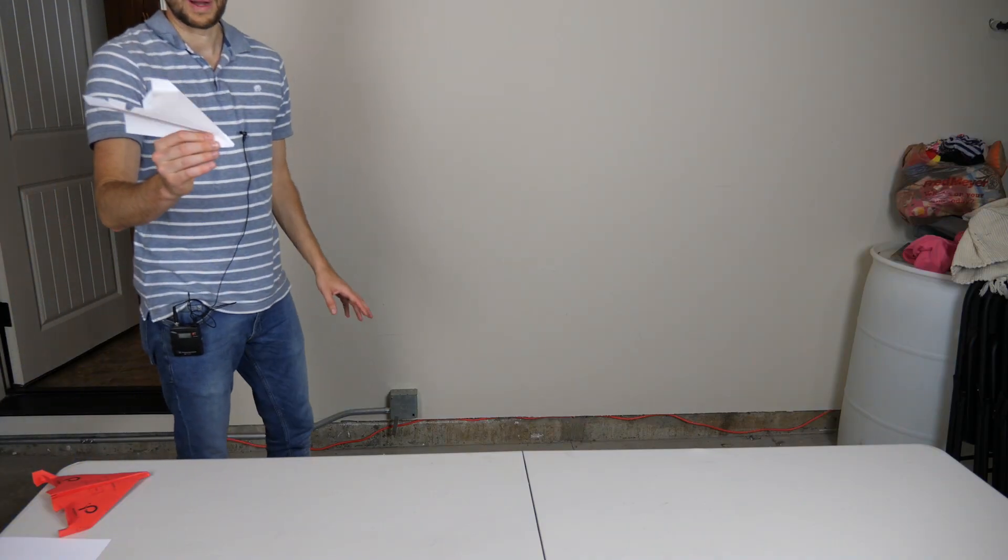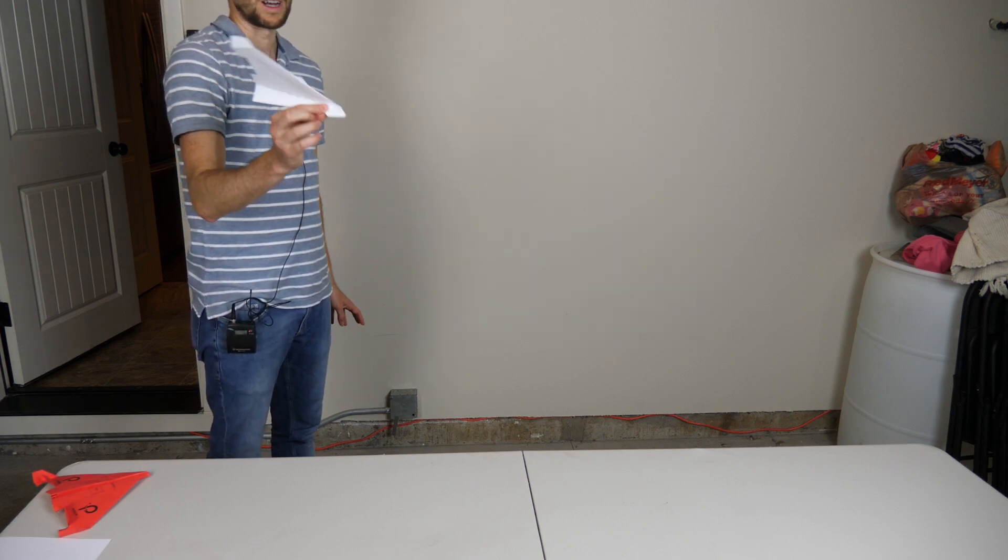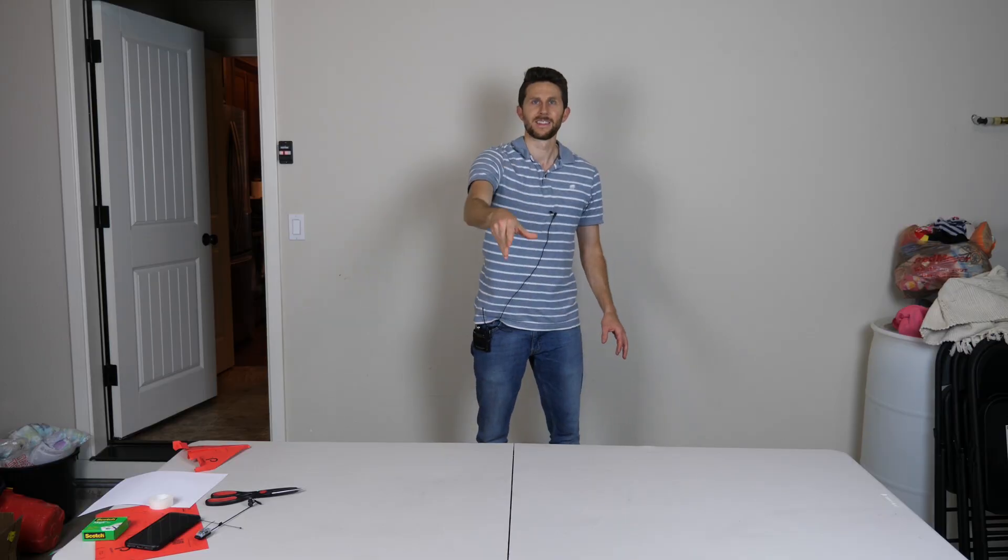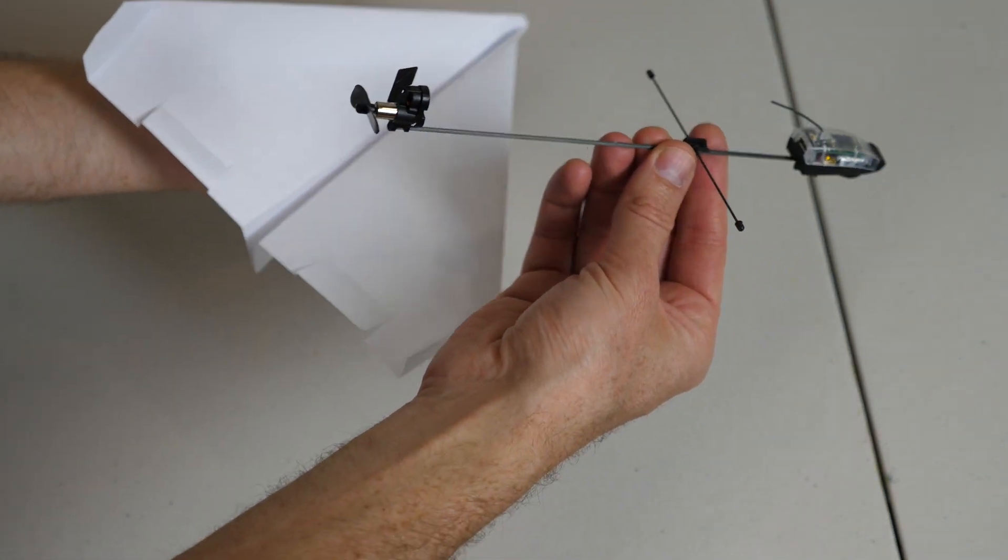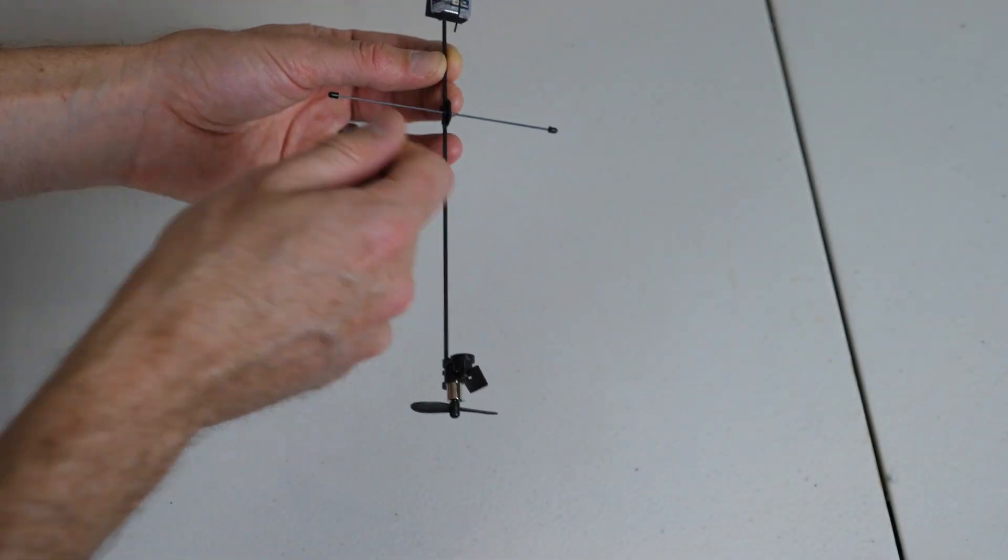Okay, so you've all flown a paper airplane before. You can make them pretty good so that they glide for quite a while, but the problem is they're just gliding, they have no power. So they always end up falling. But what happens if I were to stick a little motor on the airplane? Do you think it would still be able to fly?